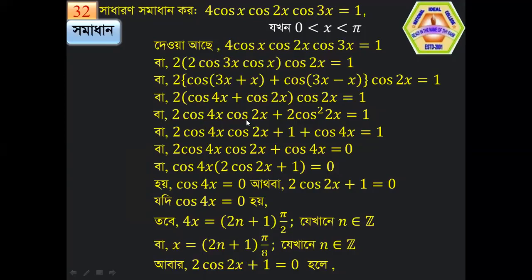We have 2cos(4x)cos(2x) + 2cos²(2x) = 1. Using 2cos²θ = 1 + cos(2θ), we write 2cos²(2x) = 1 + cos(4x). Substituting: 2cos(4x)cos(2x) + 1 + cos(4x) = 0, which gives cos(4x)(2cos(2x) + 1) = 0.